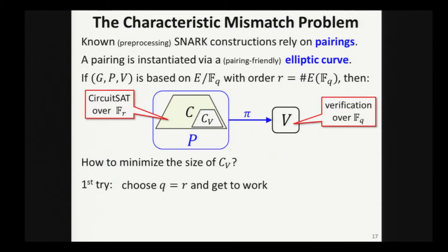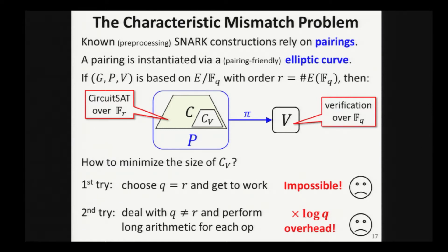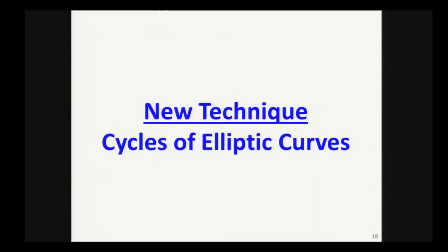So, how are we going to minimize the size of a circuit CV that has to be written over FR but wants to reason about FQ? There may be a characteristic mismatch here. So, the natural reaction here would be to say, big deal, let's just pick an elliptic curve where Q equals R and get to work. So then just write the circuit. So, at least the fields match up. Turns out, however, it's a very simple fact that every pairing-friendly elliptic curve is such that Q cannot equal R. This is just impossible. It's a bit of a bummer because now we have to deal with the fact that Q is not equal to R and we have to simulate FQ arithmetic using FR arithmetic, kind of go down to the bit level and reason about overflow and this will incur like a log Q overhead, which is, Q is a cryptographically large prime so it's like two orders of magnitude right there already.